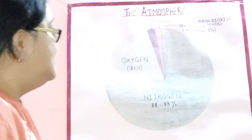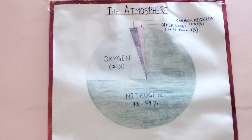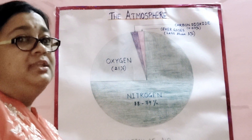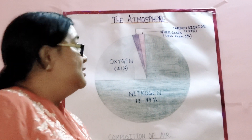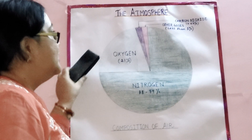In the Earth's atmosphere, gases are present in different volumes. Here in this chart you can see a diagrammatic representation of the Earth's atmosphere, where the amount of gases by volume is mentioned.